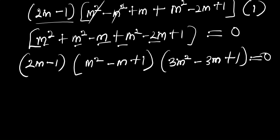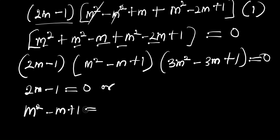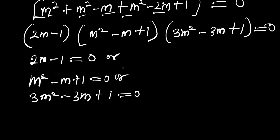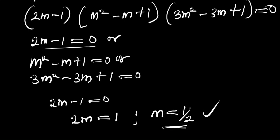The three equations are: 2m minus 1 equals 0, or m² minus m plus 1 equals 0, or 3m² minus 3m plus 1 equals 0. For the first one, 2m minus 1 equals 0 gives 2m equals 1, so m equals 1 over 2. This is the real solution.